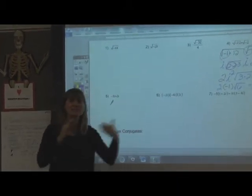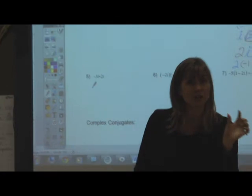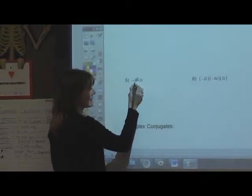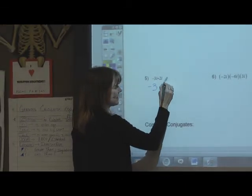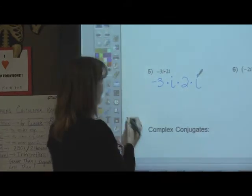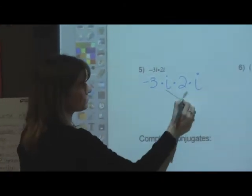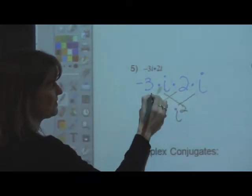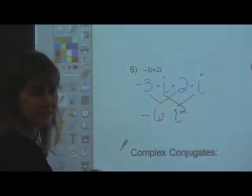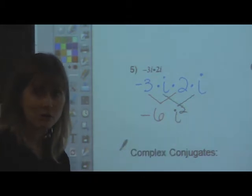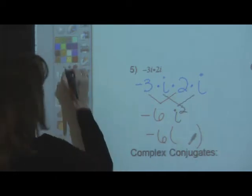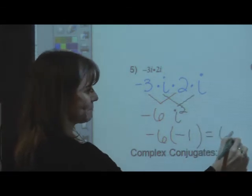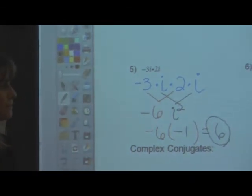With imaginary numbers, you want to put i's with i's and numbers with numbers, whether you're adding, subtracting, or multiplying. Here I have negative 3 times i times 2 times i. Group the two i's together — that's i squared. Group the numbers: negative 3 times 2 gives negative 6. But i squared is secret code for negative 1, so negative 6 times negative 1 gives positive 6 — that's your final answer.